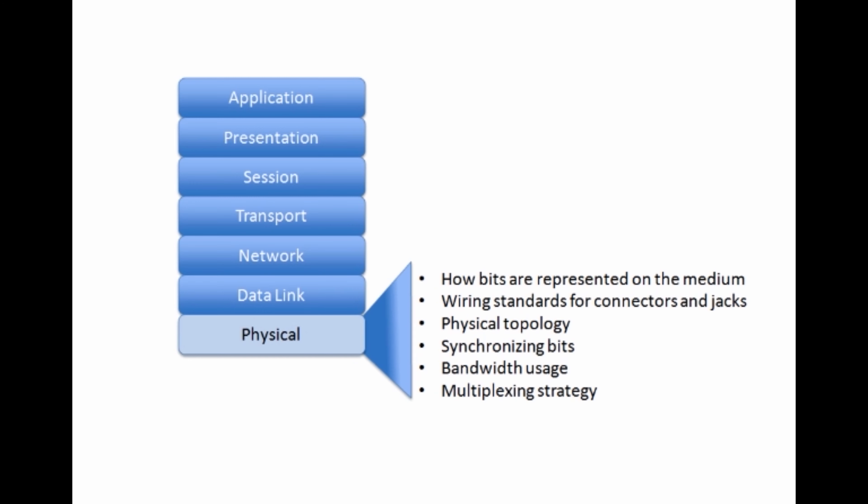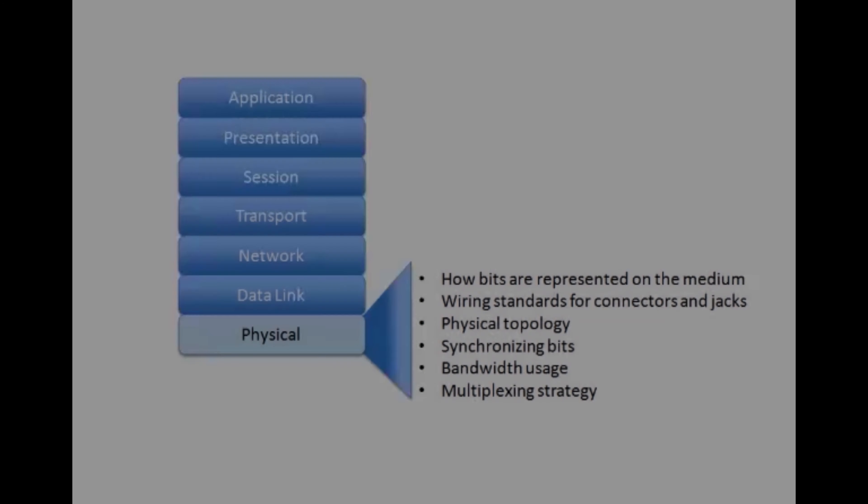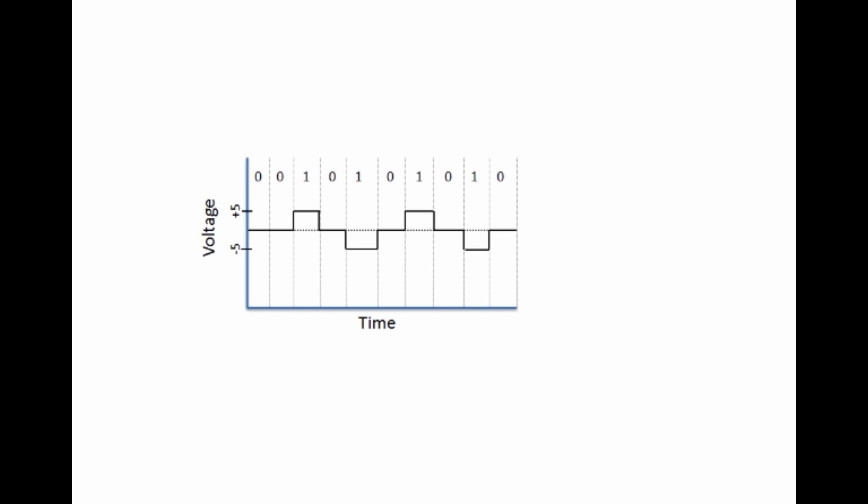And what I've just described is current state modulation. It looks like this. With current state modulation, the presence of voltage, it might be positive five volts or negative five volts. And this can vary depending on your standard. But the presence of voltage, positive or negative, could indicate a binary one. The absence of voltage, zero volts on the wire, could represent a binary zero.